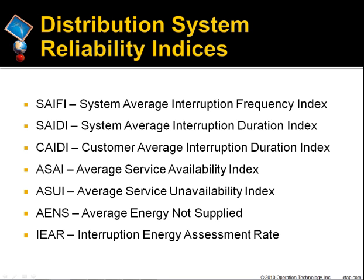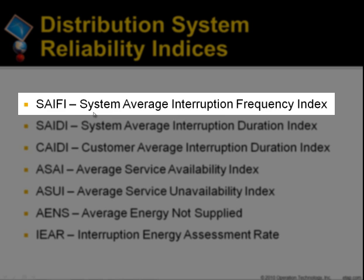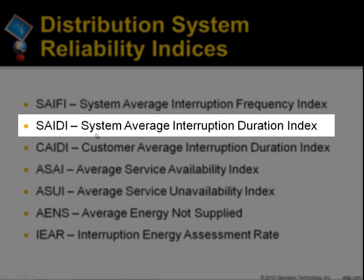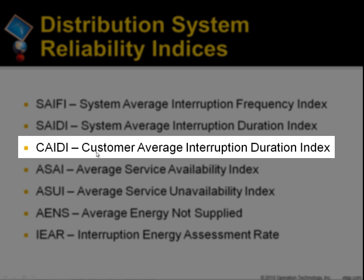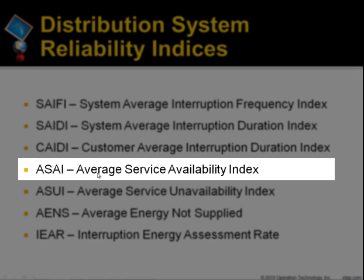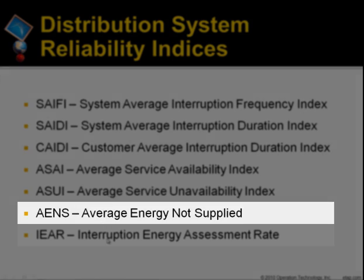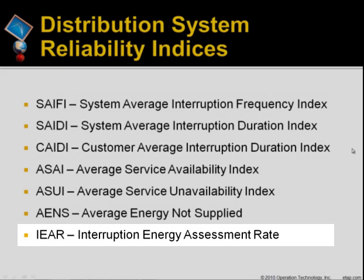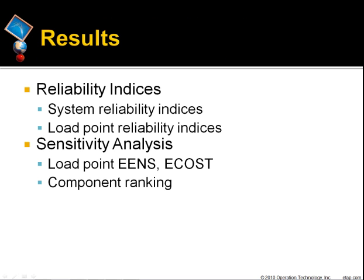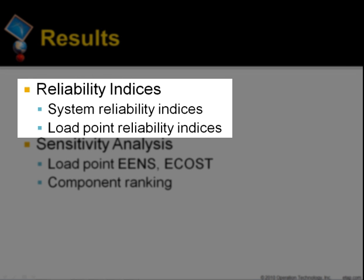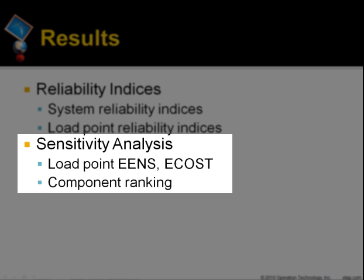Here are some of the other distribution system reliability indices for the evaluated system: System Average Interruption Frequency Index, System Average Interruption Duration Index, Customer Average Interruption Duration Index, Average Service Availability Index, Average Service Unavailability Index, Average Energy Not Supplied, Average Energy Not Supply Interruption, and Energy Assessment Rate. ETAP's reliability analysis results will be given in display, reports, and plots, providing both system and load point reliability indices. For sensitivity analysis, it gives load point EENS, cost, and component ranking.